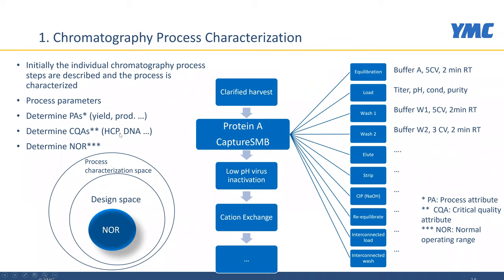We want to determine the normal operating ranges as a subspace of the design space, which is itself a subspace of the process characterization space. Initially we describe our process using process characterization experiments, which can be carried out using DOEs. A lot of this work can be done using single column chromatography, so the experimental effort to do process characterization for Capture SMB is reduced.